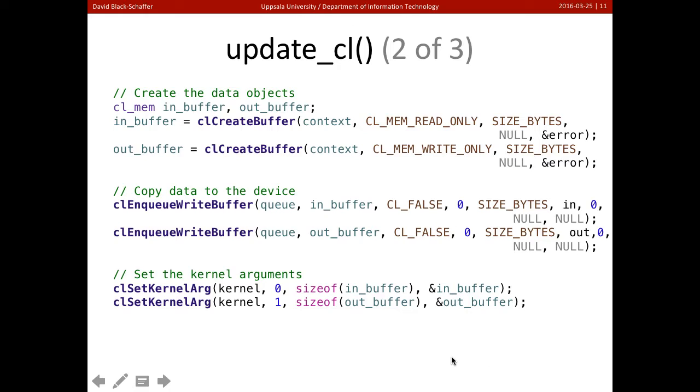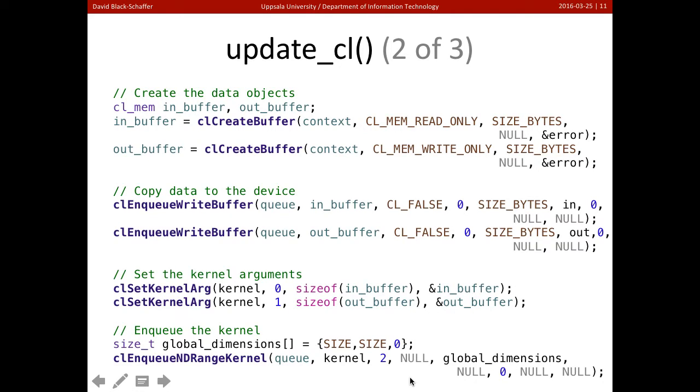Then we're going to set up the arguments for the kernel. So we're going to tell our OpenCL kernel that its zeroth argument is the in buffer, and its first argument is the out buffer. And finally, we're going to enqueue our kernel on the device. So we'll set the global dimensions. That's the amount of parallelism we want to be the size of our array, and then we'll enqueue the kernel to the queue, the kernel we want, and we'll specify the dimensions.